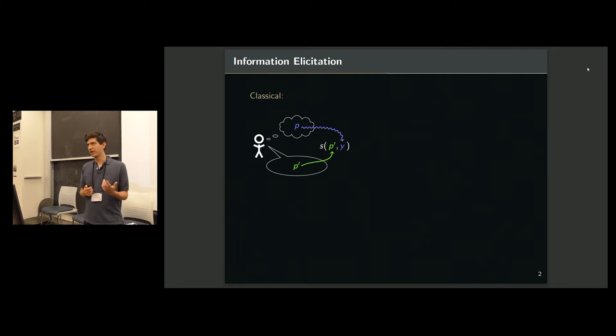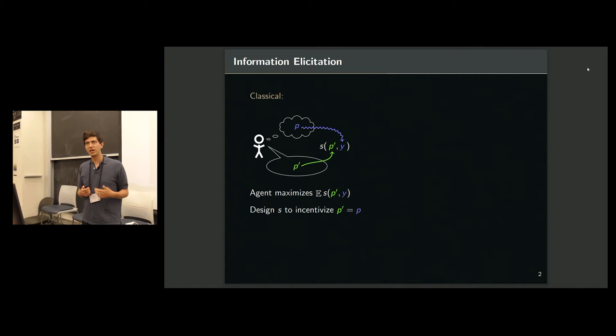So given their report P prime and the materialized outcome, which from the agent's point of view is distributed according to P, if the agent is maximizing their expected score, then you want to design S so that they report P. So that's a strictly proper scoring rule.